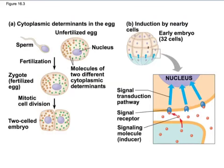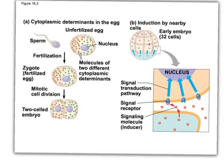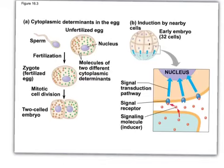Here's a better visualization from your book - cytoplasmic determinants in the egg. Here's your unfertilized egg with different transcription factors, whether circles or triangles. Division occurs and they're split between the two cells.